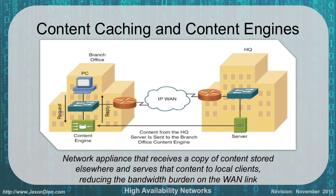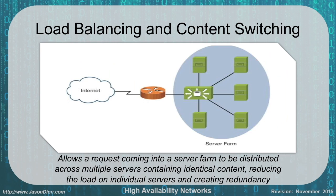Content caching and content engines are another way to provide redundancy. If we have a branch office and don't have to go back to headquarters' server every time — getting information off a local content engine instead — that provides a level of redundancy. It also gives more bandwidth speed and alleviates WAN link burden, providing more availability and reliability.